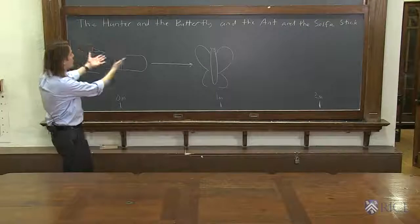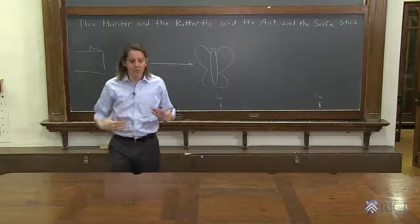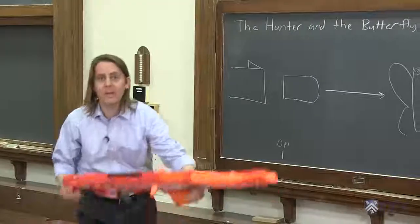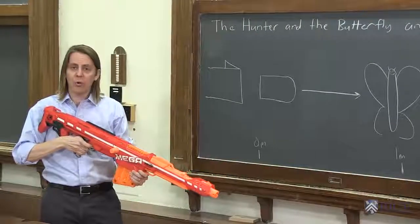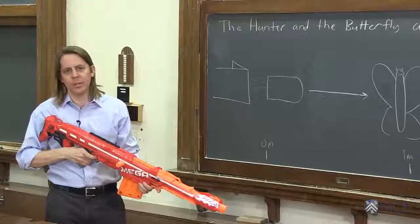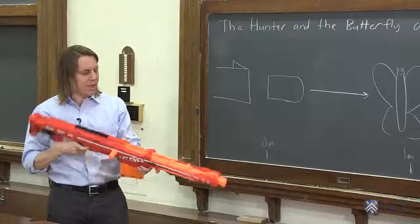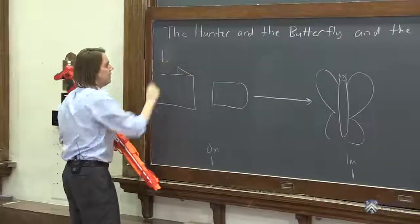And now it's time for the hunter and the butterfly and the ant and the selfie stick. I will play the hunter and I'll be using my favorite gun. This is a Callahan full-bore auto lock with customized trigger double cartridge thorough gauge. I call it Vera. Vera will remain still so she's going to stay in the lab frame.